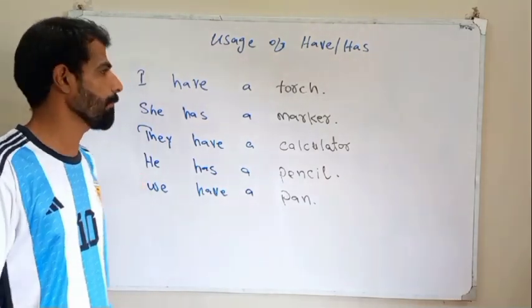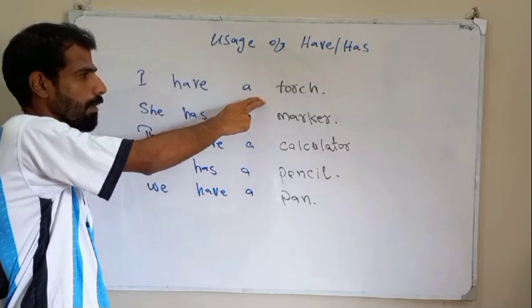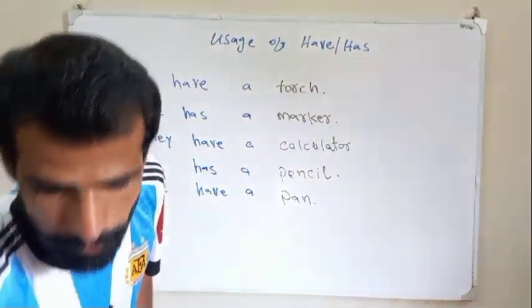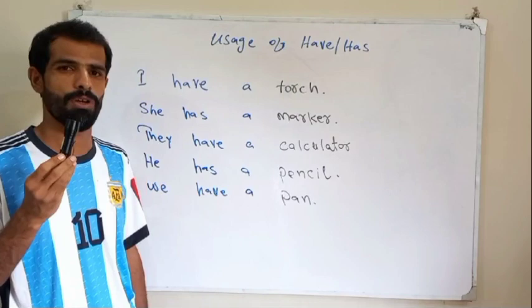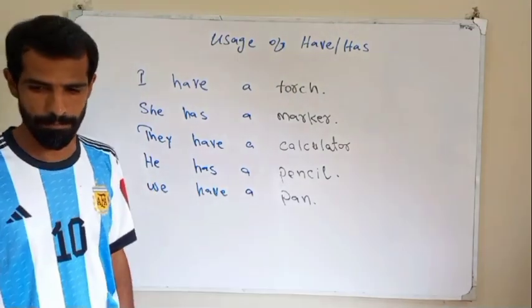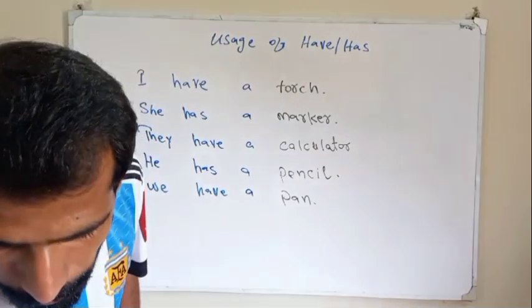And the number one is I have a torch. I have a torch, I show you like this. I have a torch, it means it is mine, it is mine. Hopefully you are understanding.